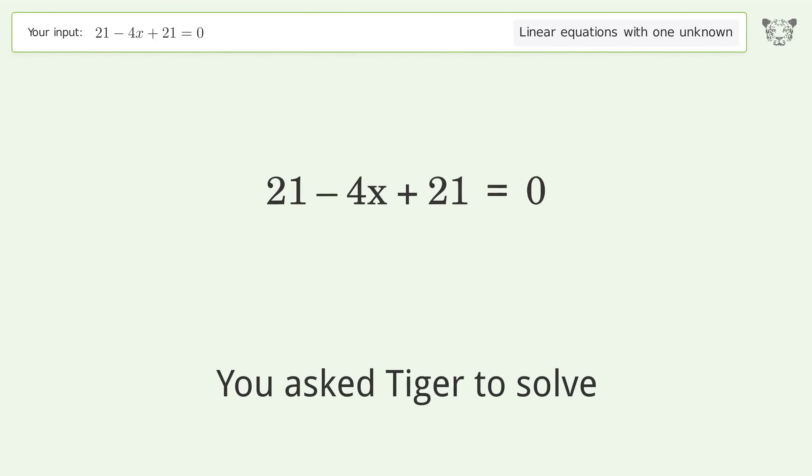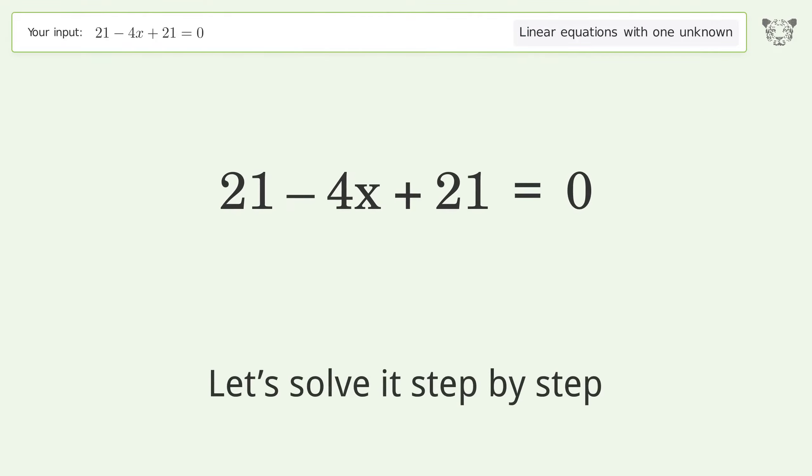You asked Tiger to solve this. It deals with linear equations with one unknown. The final result is x equals 21 over 2. Let's solve it step by step.